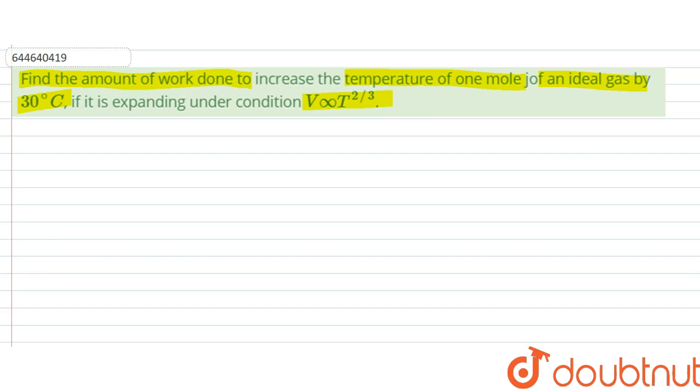PV equals nRT. This is our ideal gas equation. Since we have one mole, we can write PV equals RT, since n equals 1.